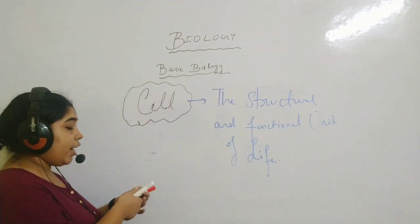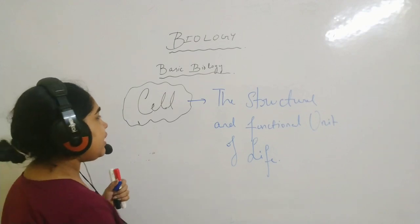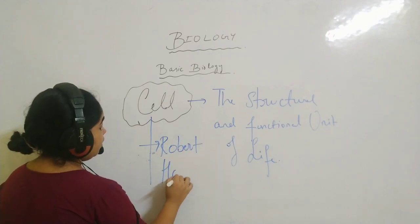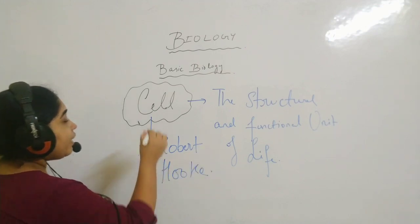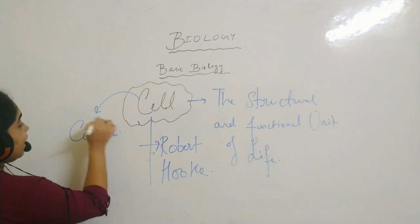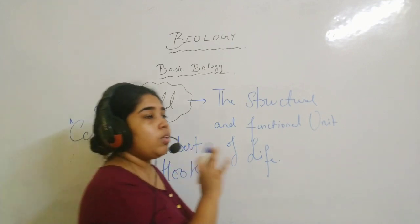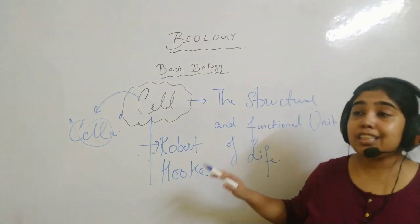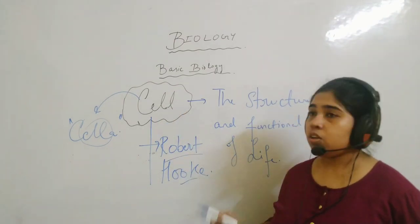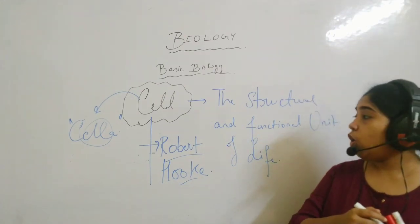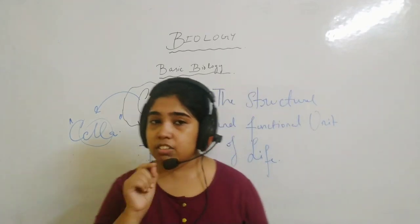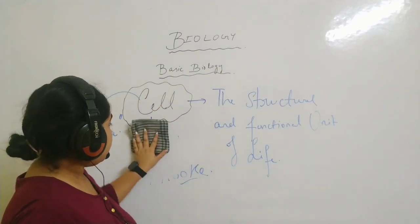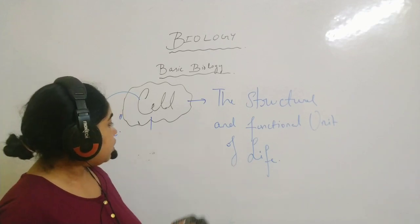The term 'cell' was coined by Robert Hooke. So Robert Hooke is the one who gave us the term cell. This word 'cell' has come from a Latin word known as 'cella.' The term cell was coined by Robert Hooke — this is an important static fact that you need to understand.